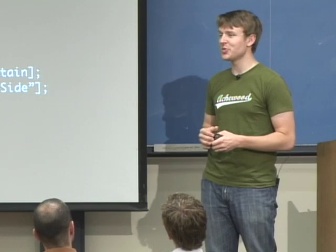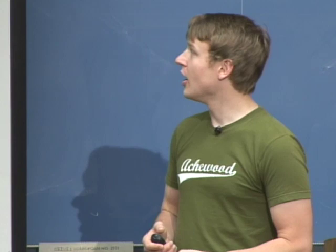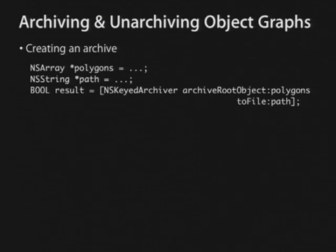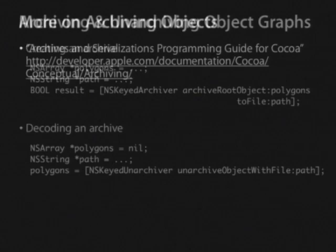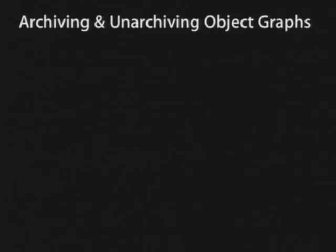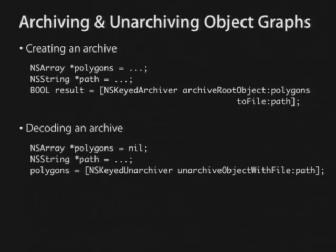If you want to maintain relationships or archive a whole array or dictionary of objects, you'd call NSKeyedArchiver archiveRootObject: toFile:, passing something like an array as the root object and specifying the path. It'll call encodeWithCoder on all the objects in the array and write the whole thing out to disk. On the flip side, to decode it, you'd call NSKeyedUnarchiver unarchiveObjectWithFile:. You don't need this for any of your assignments, but it's important to know it's there.